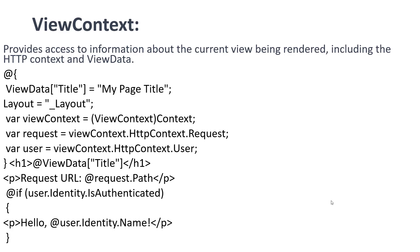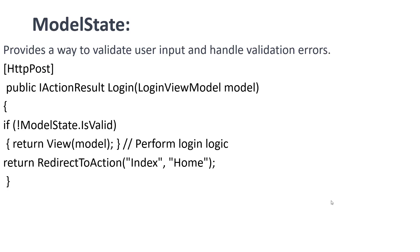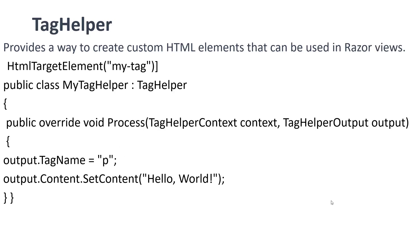The next helper method is ModelState, which provides a way to validate user inputs and handle validation errors. When a user submits a form like a login form, ModelState handles inputs like username and password, and validates things like null checks, username length, and password length.